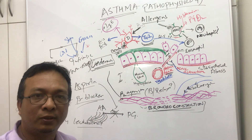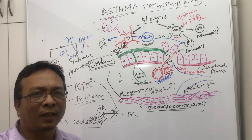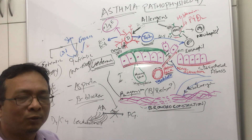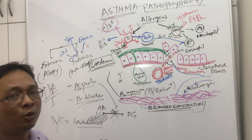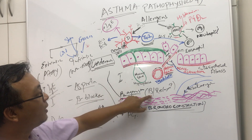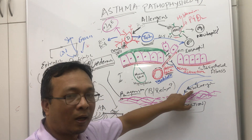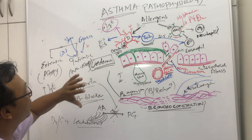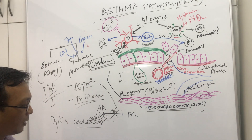Together, these cause wheeze, difficulty breathing, dyspnea, bronchoconstriction, and tightness in the chest — all those signs and symptoms. In treatment, we give short-acting beta-2 agonists, trying to relax the bronchi and counter this cholinergic reflex. That is the main step of the pathophysiology of asthma.